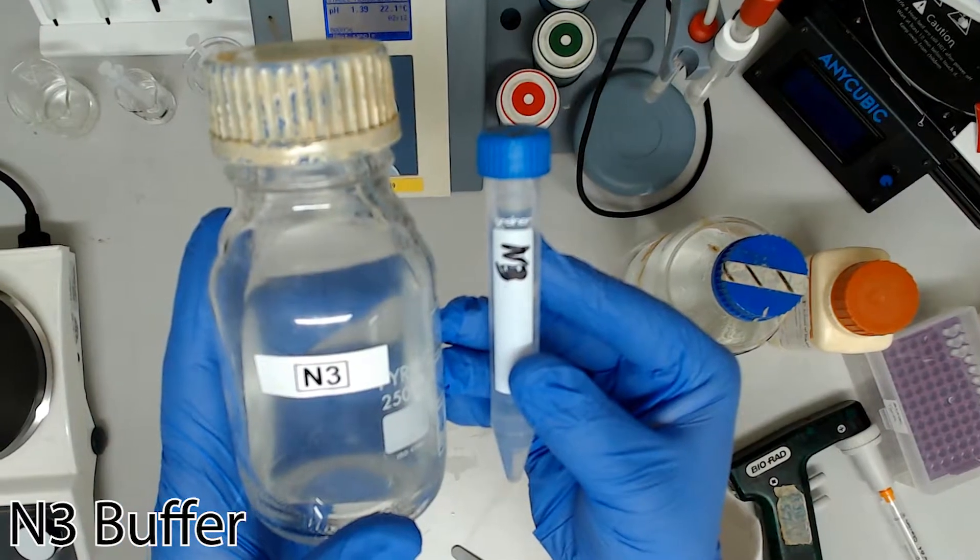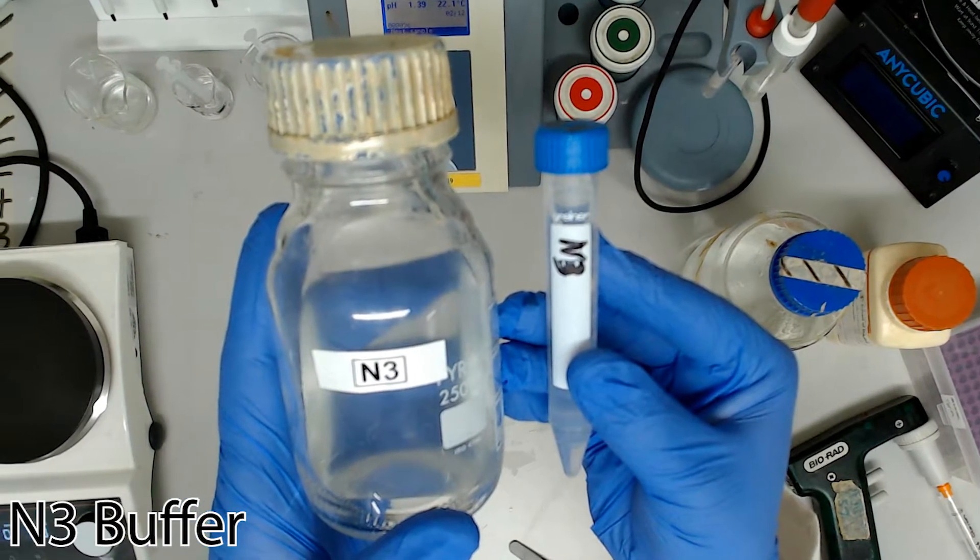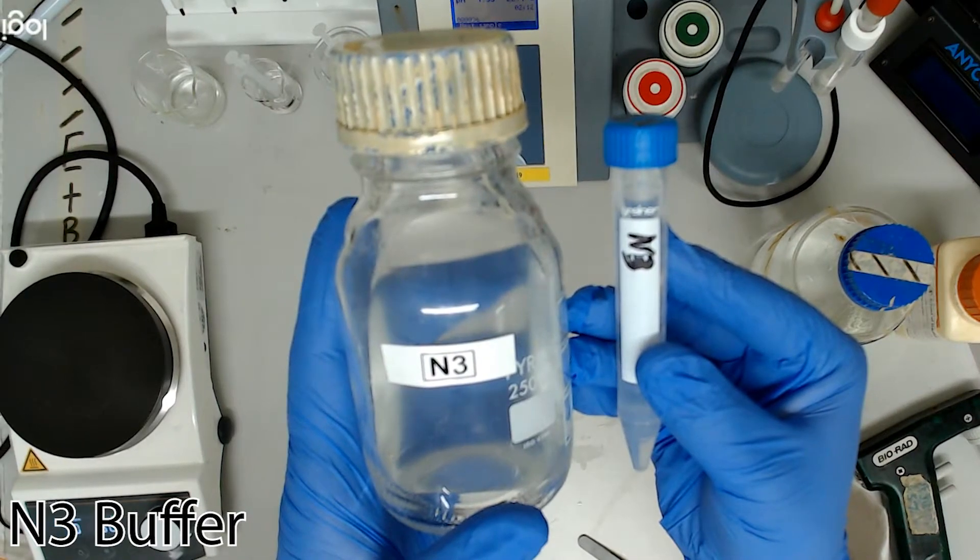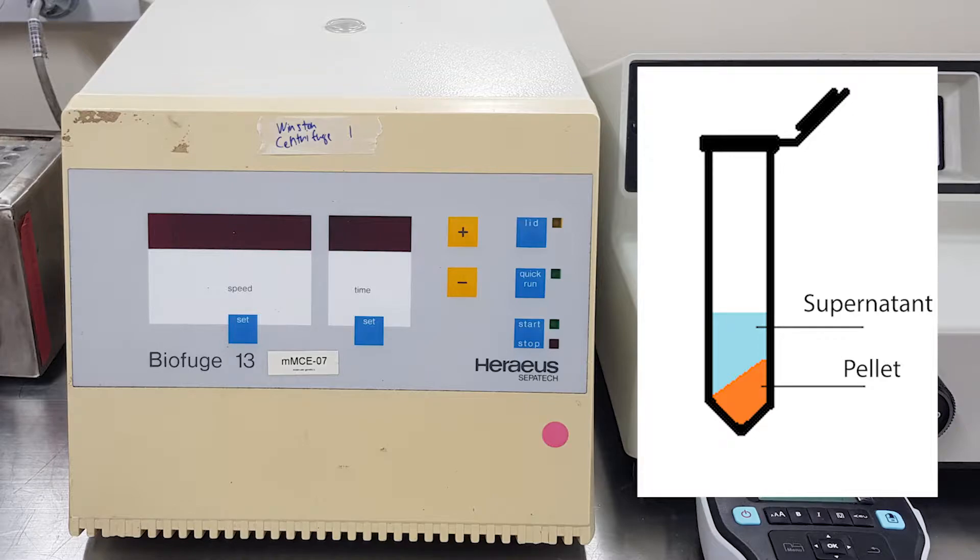The next buffer in the series is aptly named the neutralization buffer as it will precipitate out denatured proteins, chromosomal DNA, cellular debris and SDS, leaving our much smaller plasmid DNA within the solution. This combination of buffers will allow us to use a centrifugation step to quickly separate our plasmid DNA from the majority of the cellular mass.